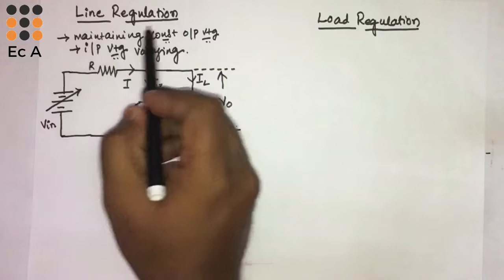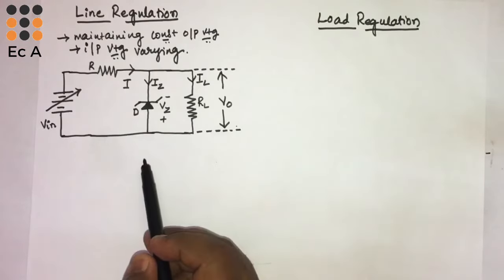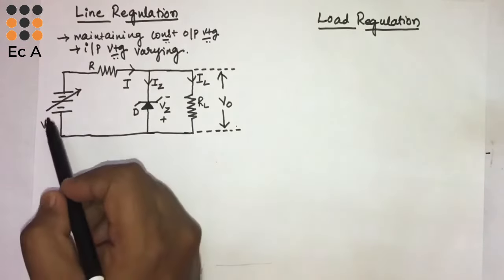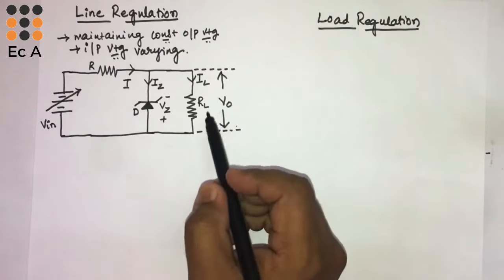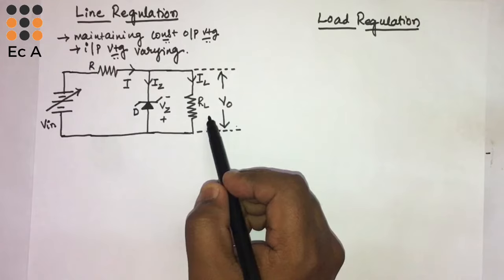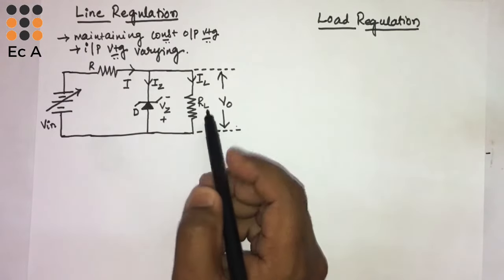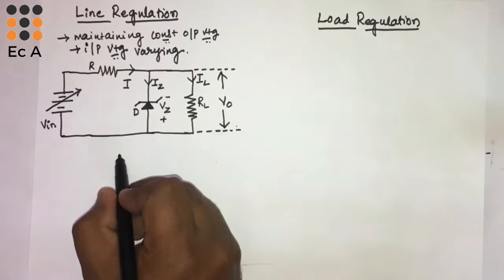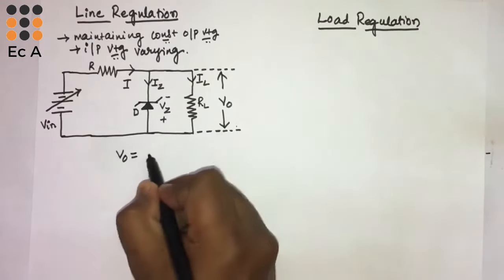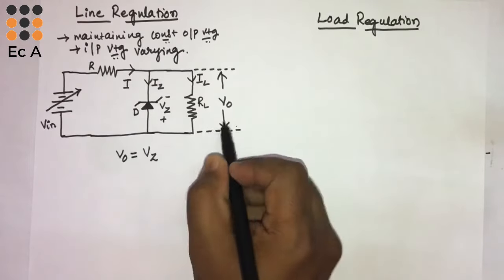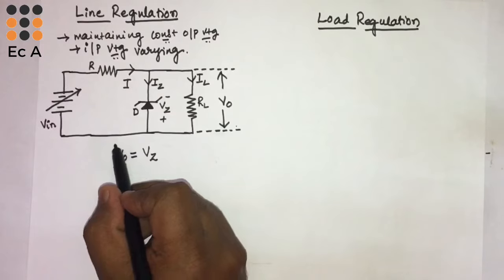To understand line regulation, let us consider a voltage regulator circuit where the input is varying and the load resistor is fixed. Here a zener diode is connected in parallel with the load resistor, that is why we can write V-out is equal to V-Z.